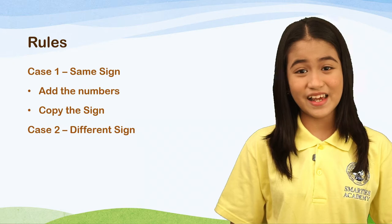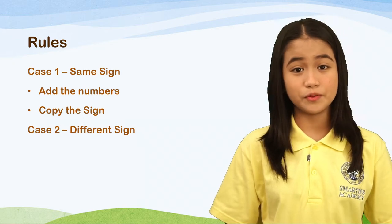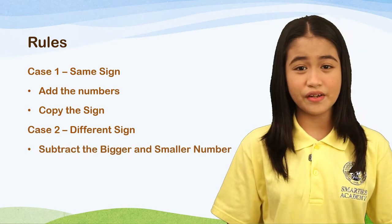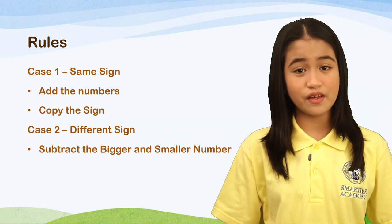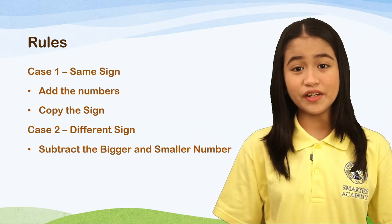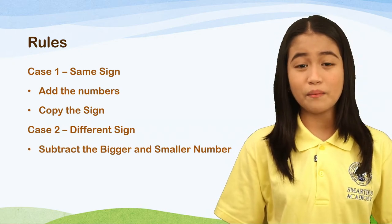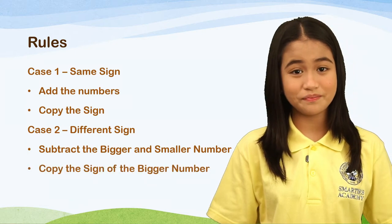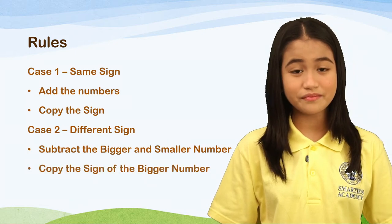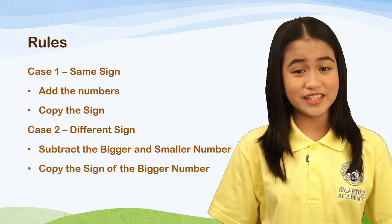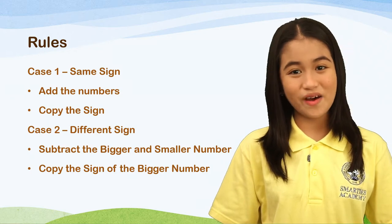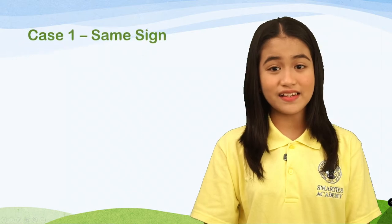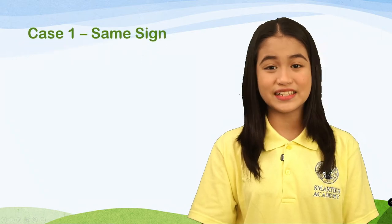If that's the case, this is what we will do: subtract the bigger and smaller number regardless of the sign. And after we get the answer, we will copy the sign of the bigger number. To further understand, let's start discussing Case number 1 — adding integers with the same sign.